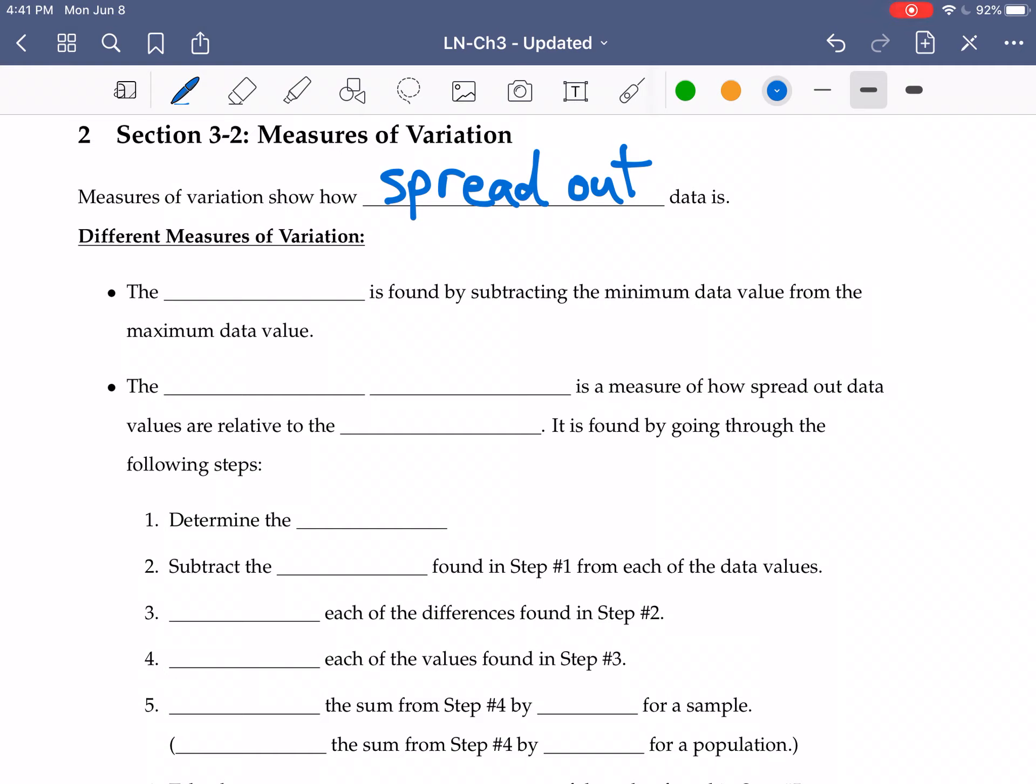So one measure of variation that we have, the simplest to compute, is the range. So the range, we find this by subtracting the minimum from the maximum data value. That's the maximum value minus the minimum value.